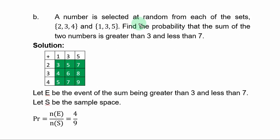Question 1b. A number is selected at random from each of the sets, the entries or elements, you have {2, 3, 4} and {1, 3, 5}. Find the probability that the sum of the two numbers is greater than 3 and less than 7. What we do is that we simply generate a sum table by considering the two sets.